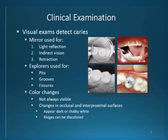The clinical exam requires the use of a mirror for light reflection, indirect vision, and retraction. The explorer is used to identify pits, grooves, and fissures. You may have learned to use this instrument in detecting decay in these areas by adapting the light force that encourages a stick. You may have come across some difficulty in removing the instrument from the tooth surface if this pit was quite deep. Be mindful of this procedure — it is not necessary to actually do this if visible decay is obvious.